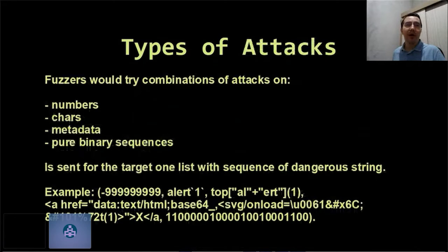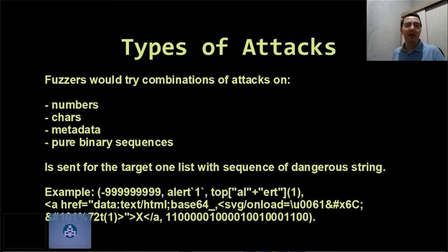Types of attacks. Fuzzers would try combinations of attacks on numbers, chars, metadata, pure binary sequences. We send to the target, one by one, each with a sequence of the danger string. Again, we send the danger string. Here we have some examples.